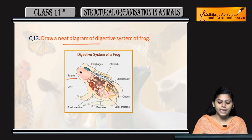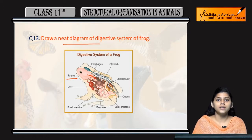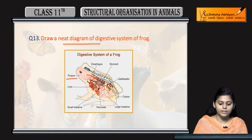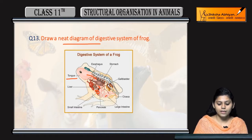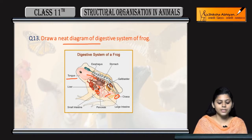From the esophagus, food reaches the stomach. From the stomach, food goes to the small intestine, then to the large intestine, and finally to the cloaca region. The liver is also present.